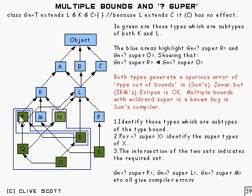Now if you look down here in green I've highlighted all of those types which are subtypes of both K and L. Therefore candidates for this inclusion.